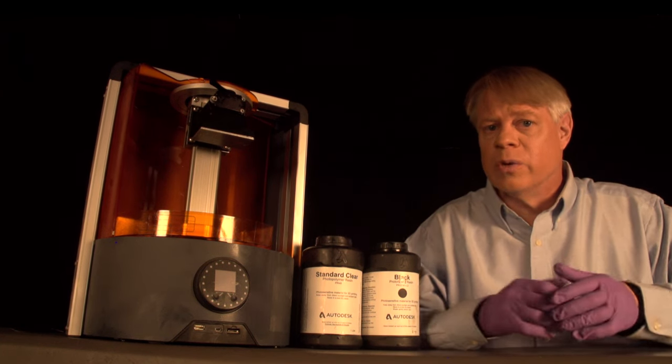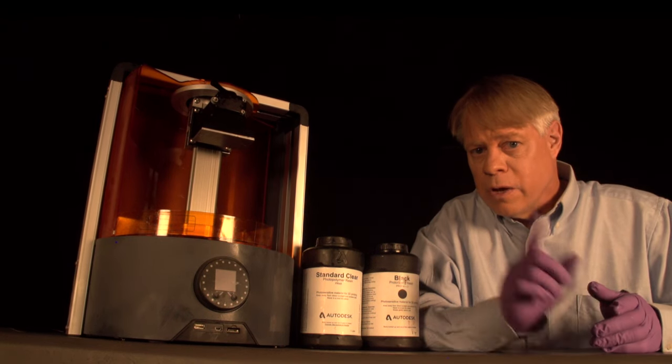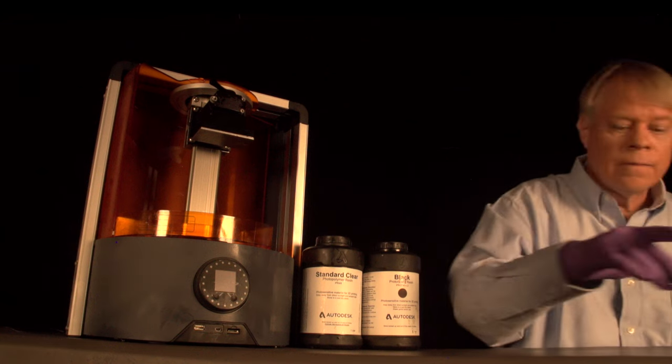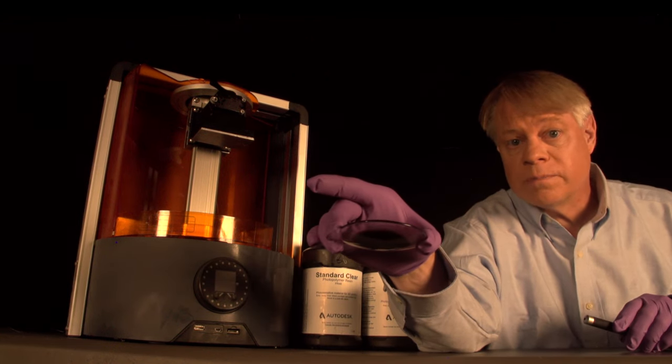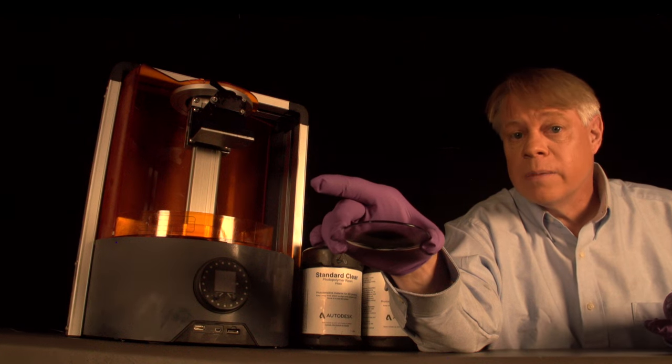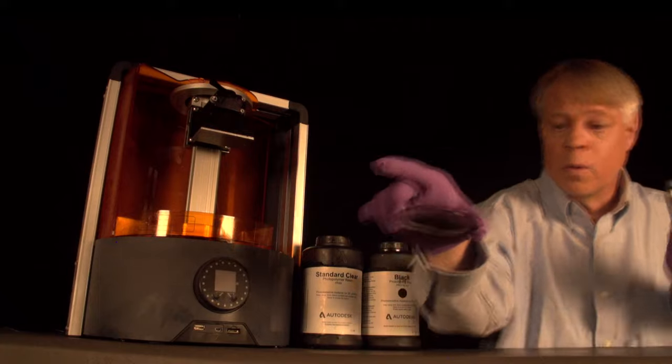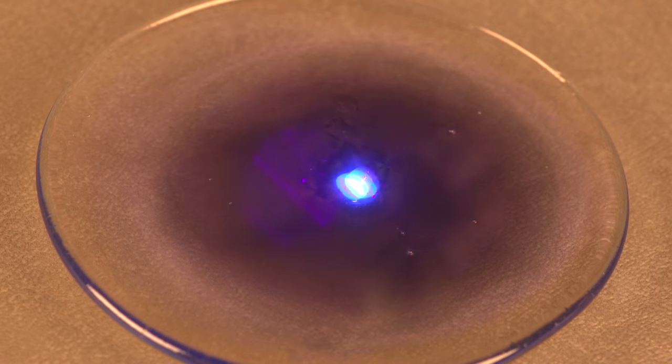That orange tray shields the resin from room light, which might solidify the resin inadvertently. To show you how this works, I've filled this watch glass with a bit of resin. I printed the swan with clear resin, but here I've mixed in some black resin to show solidification better. Watch what happens when I shine this blue laser on it. Almost instantly, the resin solidifies.